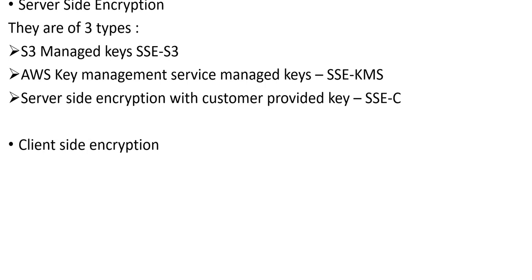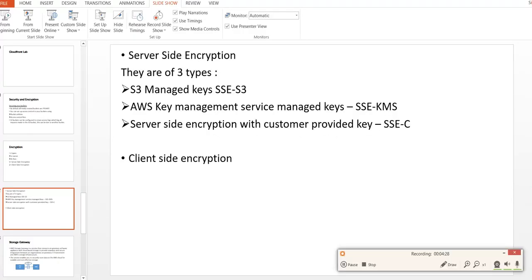The third type is server-side encryption with customer-provided keys, also known as SSE-C. Here, we manage the encryption key and Amazon manages the encryption itself. The other type of at-rest encryption is client-side encryption, where we encrypt the data on the client side and then upload it to S3.